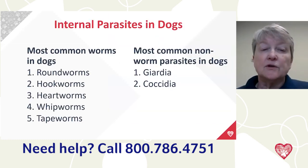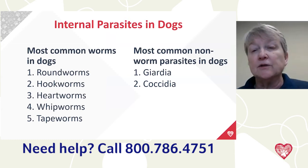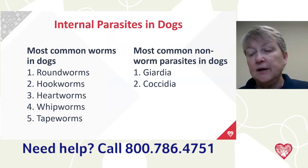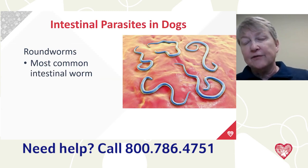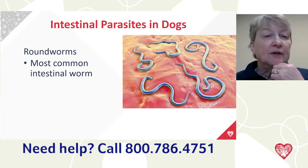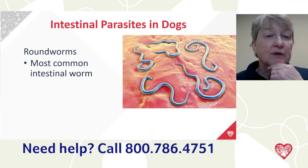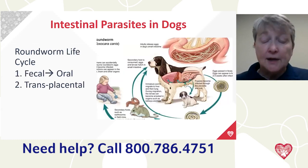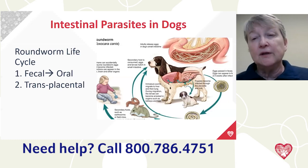The most common worms we see in dogs are roundworms and hookworms. We also see heartworm, whipworms, and tapeworms — in roughly that order of frequency. There are also intestinal parasites that aren't worms: giardia and coccidia. Roundworms are the most common intestinal worm. They live in the intestines and manage to swim upstream against the food moving through. The life cycle is important — it can be spread fecal-orally, meaning a dog or person can ingest the eggs and develop an infestation.